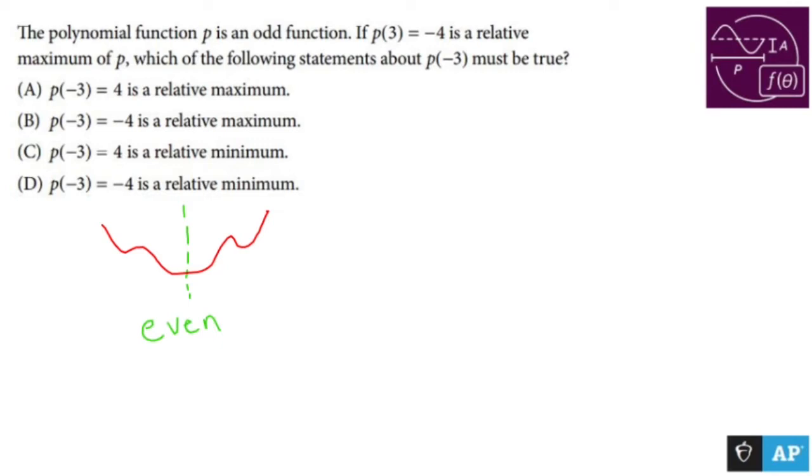Something that is an odd function is basically like a spun shape. It's symmetry. It's symmetric around the origin is probably the best way to say it. So if it's odd, and I have something like this going on, that happens. And I think that's probably the best picture I'll draw.